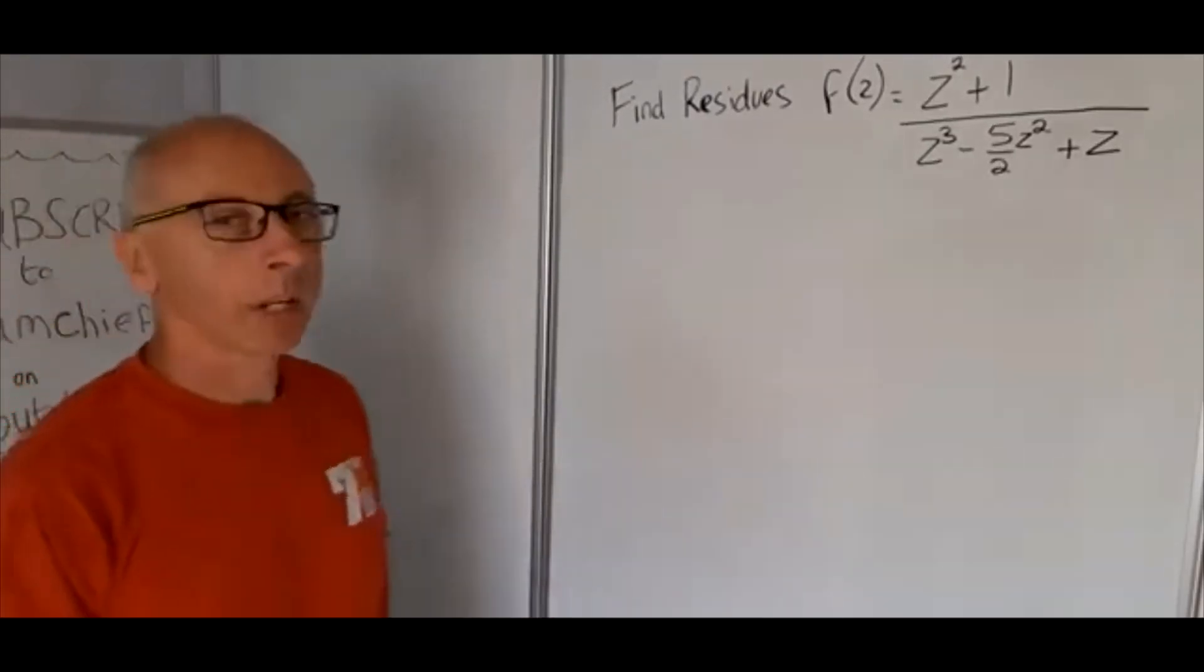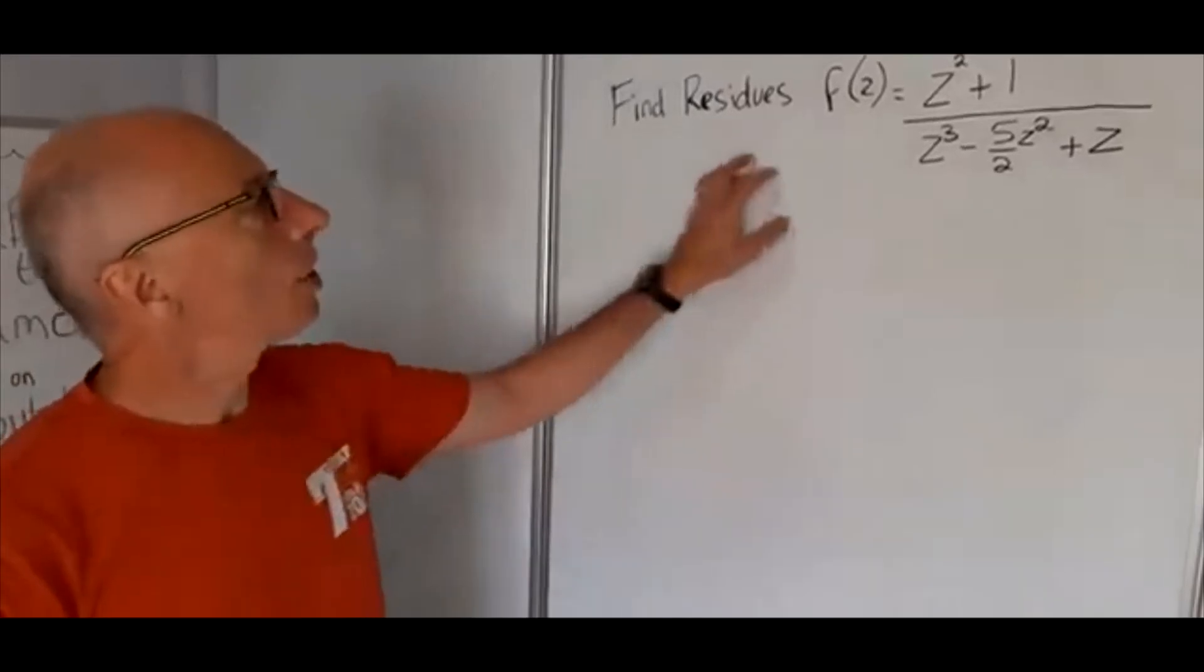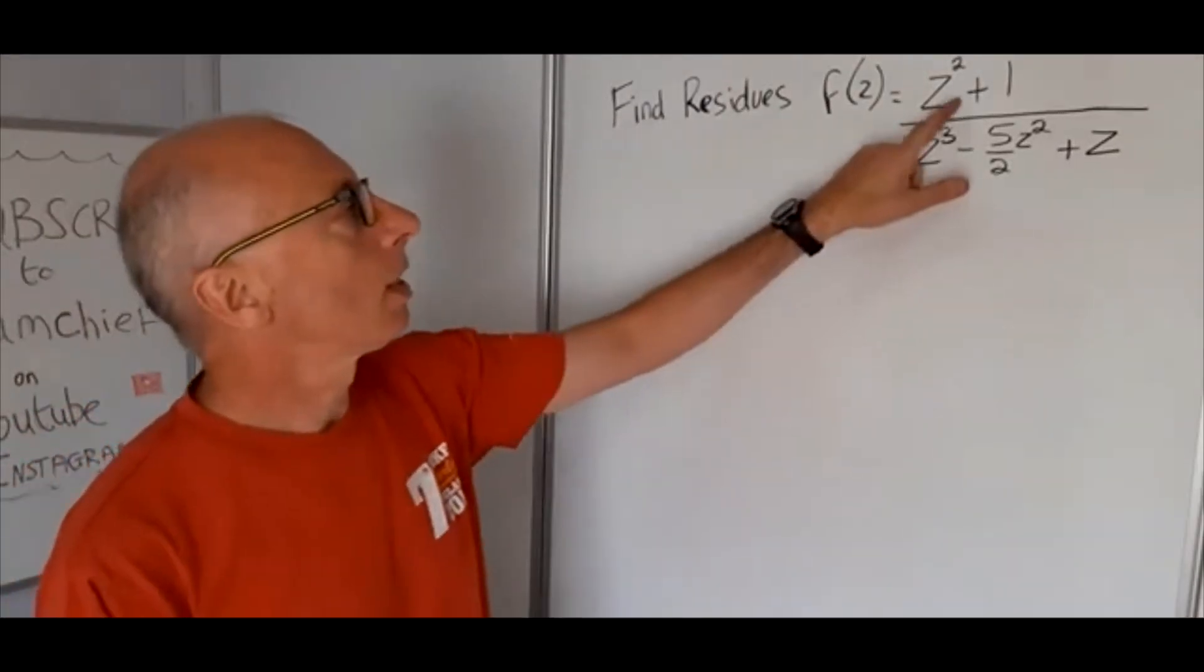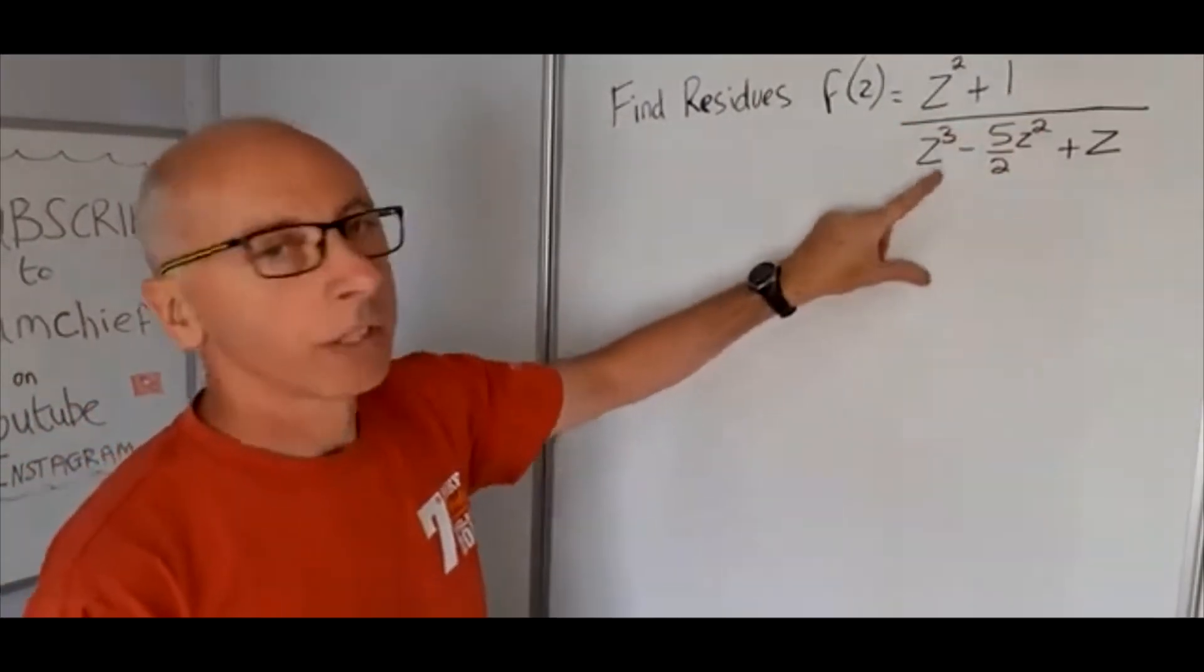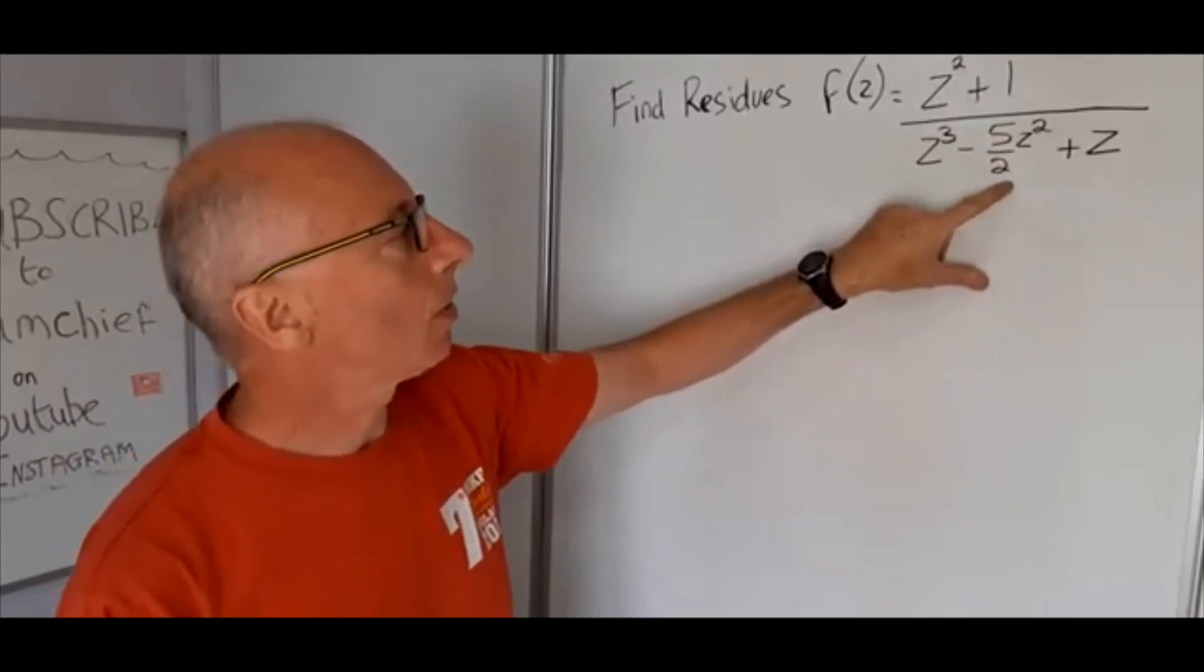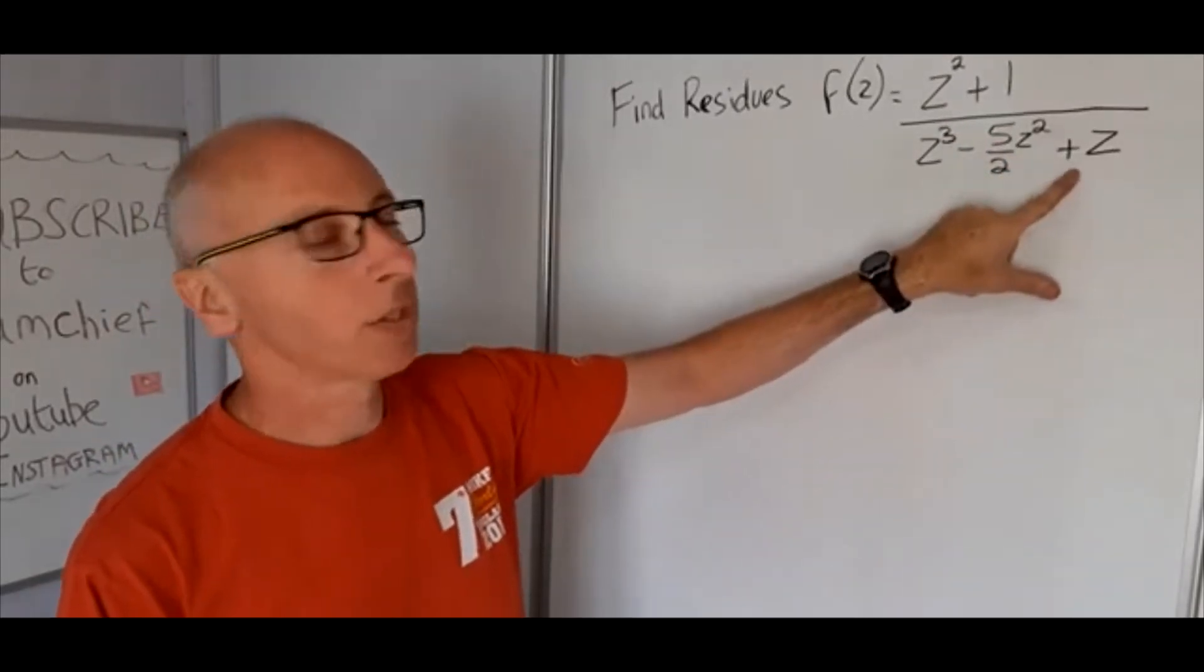Okay, so we're going to do some complex analysis and we're going to find the residues of this function here: z squared plus 1 divided by z cubed minus 5 over 2 z squared plus z.